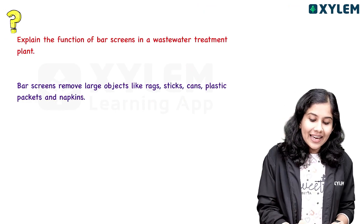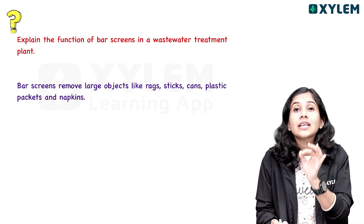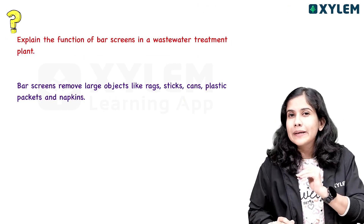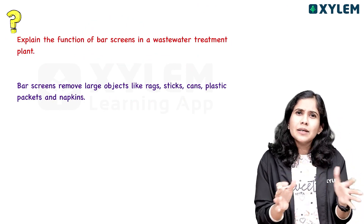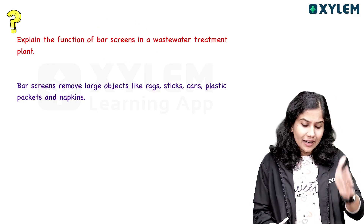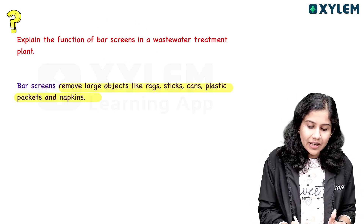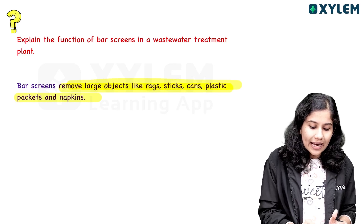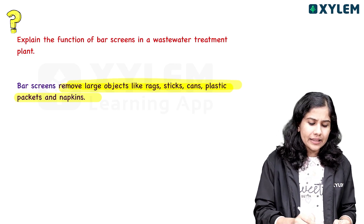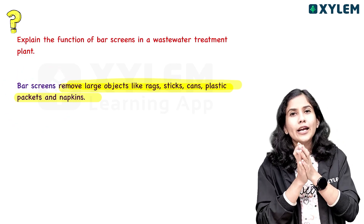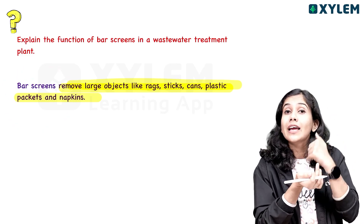The next question is: explain the function of bar screens in a wastewater treatment plant. If we use wastewater treatment, we can use bar screens. Simple — the screening effect. How do we remove large objects? Sticks, cans, plastic — these are removed using bar screens.